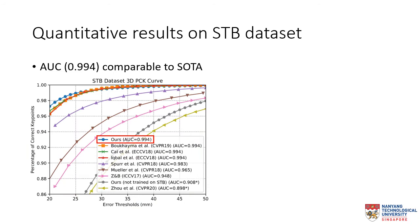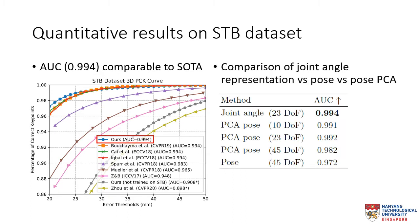For the STB dataset, we compare our results with various deep learning-based methods, and as shown in the percentage of correct keypoints PCK curve, our area under the curve AUC score of 0.994 is comparable with most of the existing works.